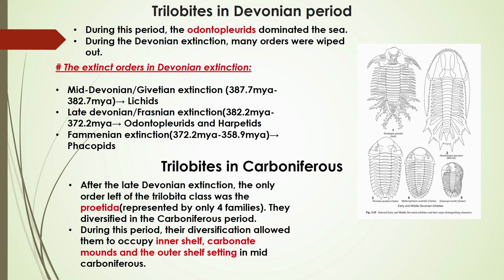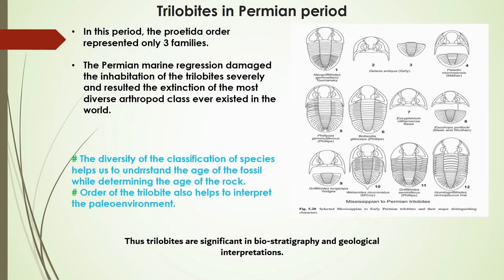After the late Devonian extinction, the only living trilobites were the Proetida, represented by only four families, which diversified in the inner shelf carbonate mounds and the outer shelf region. Finally, after surviving through several extinctions, the Proetida went extinct in the great Permian extinction due to the regression of the sea, which damaged their habitat.